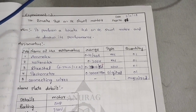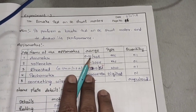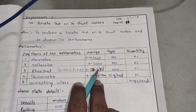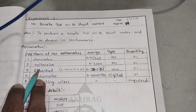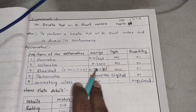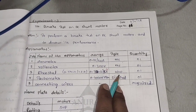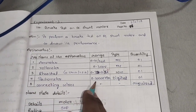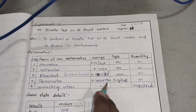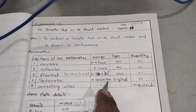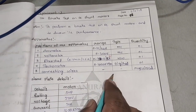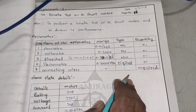The apparatus required to perform this experiment: an ammeter of range 0 to 10 or 20 amperes of type MC (moving coil), quantity one; a voltmeter of 0 to 300 volts, type MC, quantity one; a rheostat of range 0 to 370 ohms by 1.7 amperes, type wire wound, quantity one; a tachometer used to measure the speed of the motor in RPM, range 0 to 10,000 RPM, digital type; and connecting wires as per requirement.